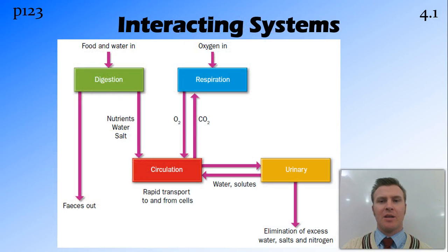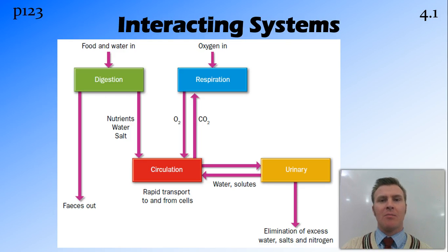So firstly, how the systems interact with each other. The gaseous exchange systems in animals are called the respiratory system, and their main role is to get oxygen from outside the body, inside the body and in contact with the blood. The circulatory system then circulates that oxygen around the body. At the same time, the digestive system brings food and water into the body and, after breaking that food and water down, gets it in contact with the blood at the small intestine, into the circulatory system — so again into the blood.